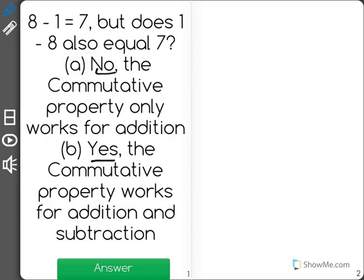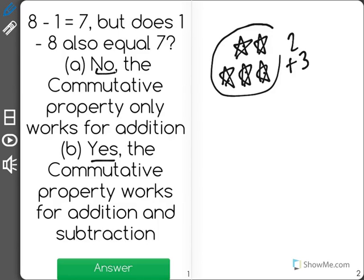What the commutative property says is that if you're adding 2 and 3, and you're doing 2 plus 3, it doesn't matter if you start by counting the 3 or if you start by counting the 2. Either way, you're going to get 5.